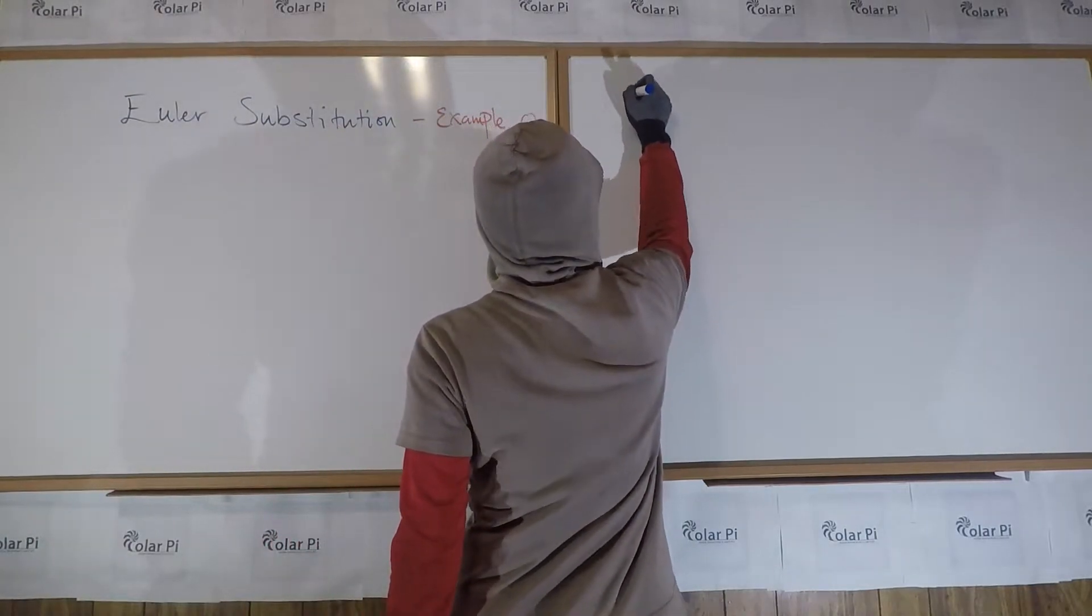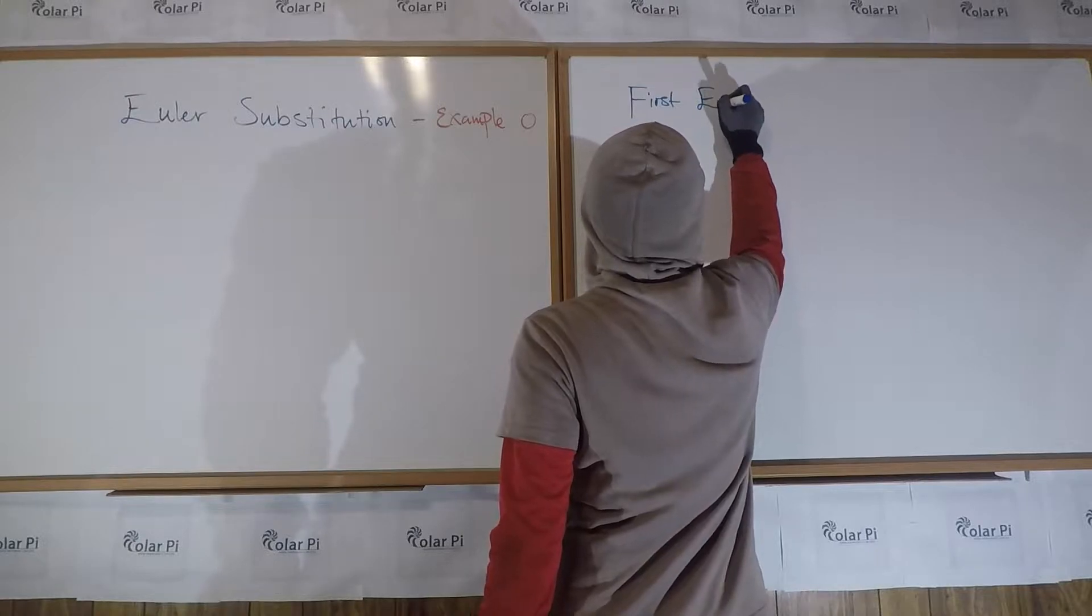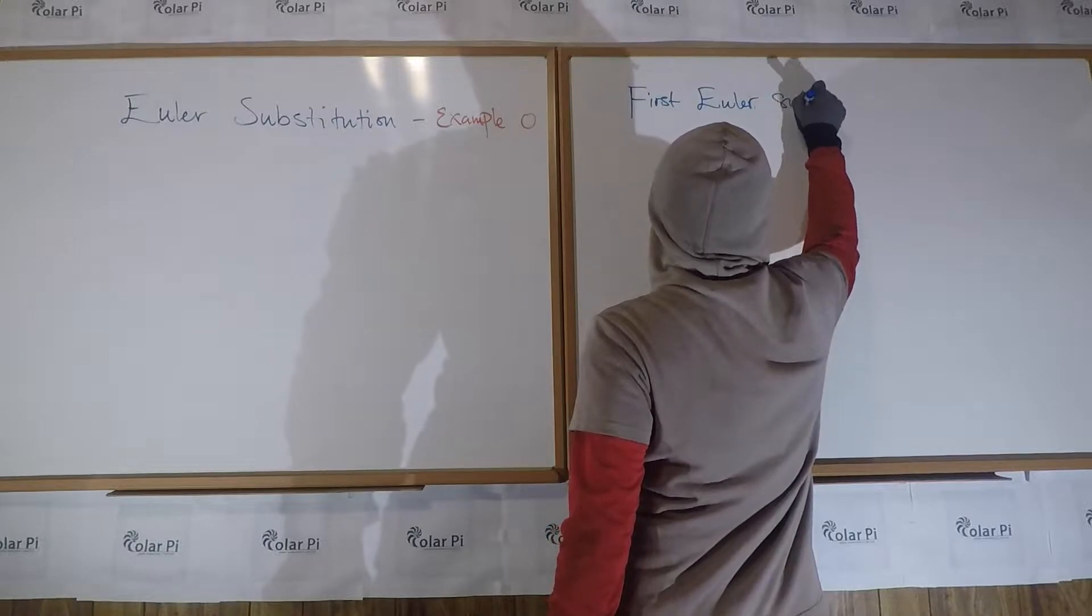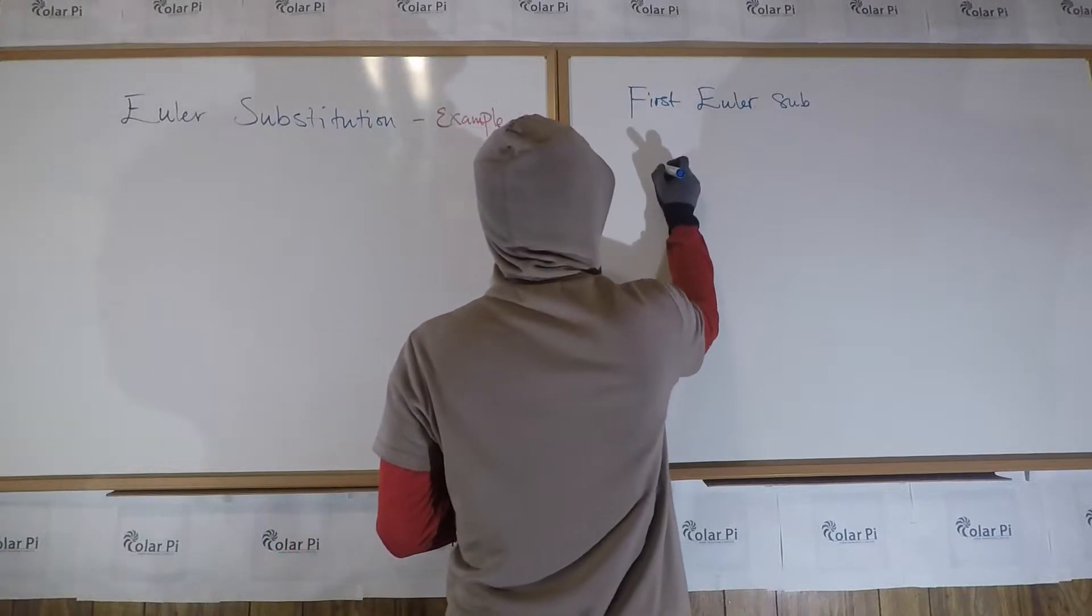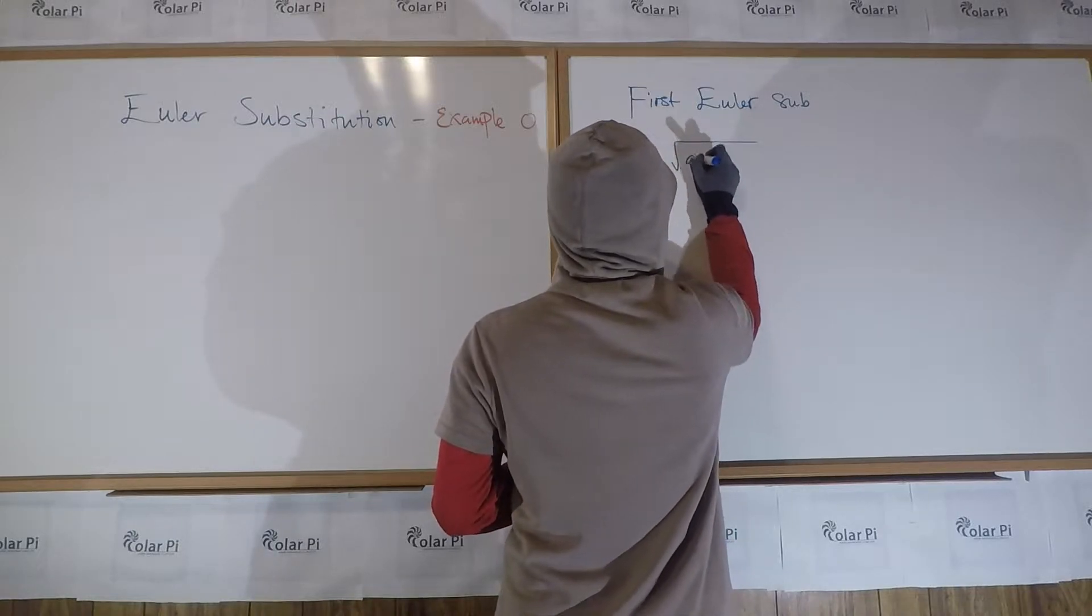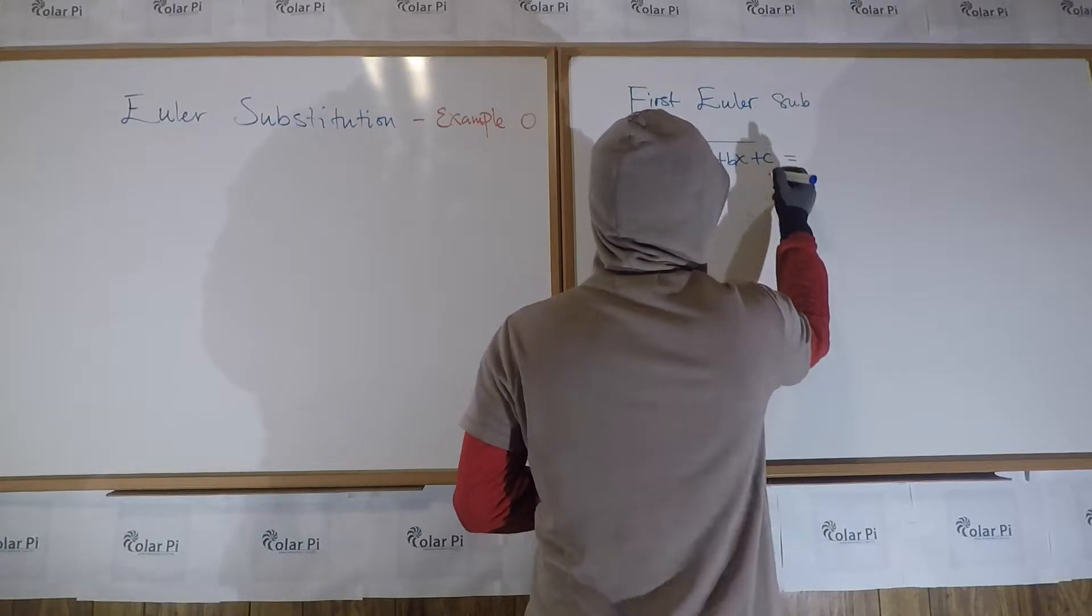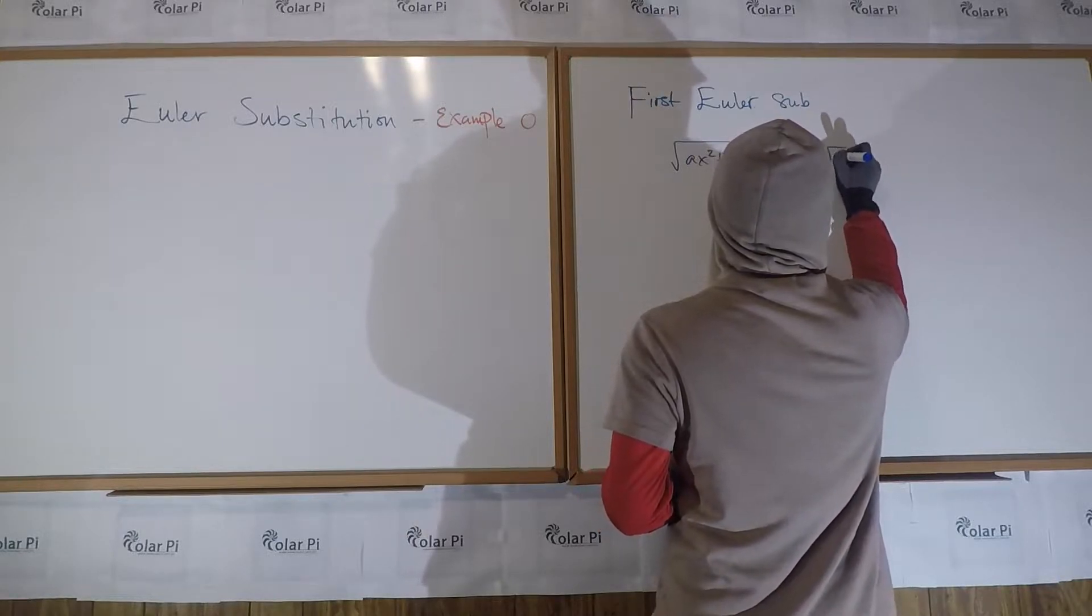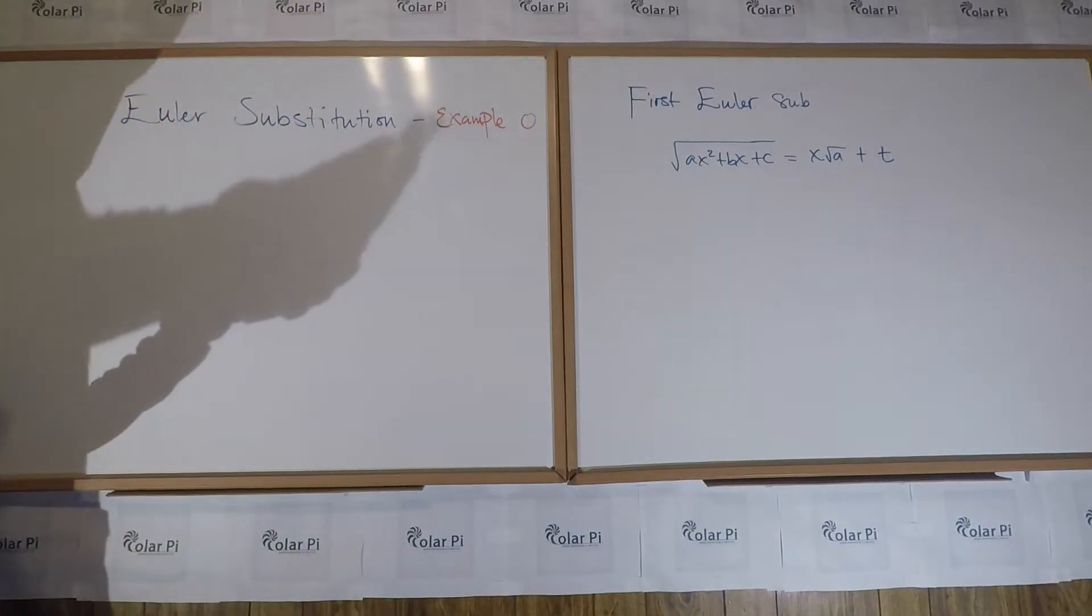Okay, so the first Euler substitution is to let the square root of ax squared plus bx plus c equal x root a plus t. Now, it might not be immediately clear why this is helpful, but look.